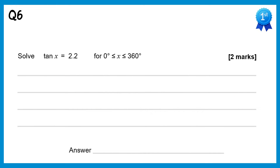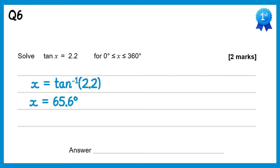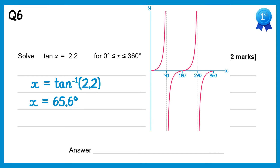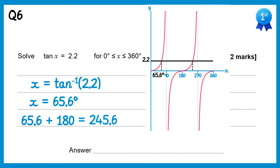For this question we do inverse tan of 2.2. Using your calculator that gives 65.6 degrees to one decimal place. We draw a horizontal line at 2.2 on the graph, giving two solutions. We already have the first at 65.6, and to get the second we add 180: 65.6 plus 180 is 245.6. So there are two solutions: 65.6 degrees and 245.6 degrees.